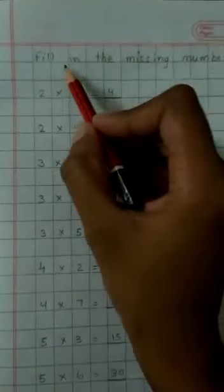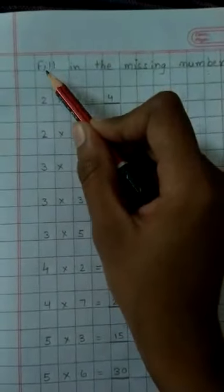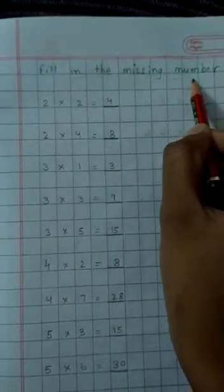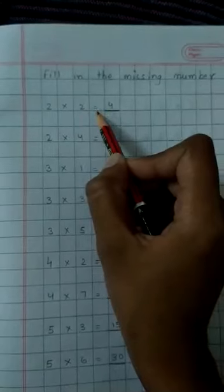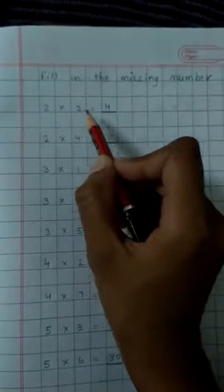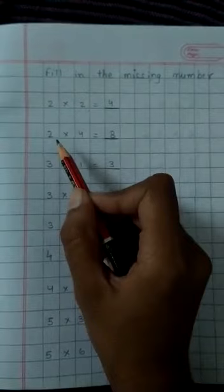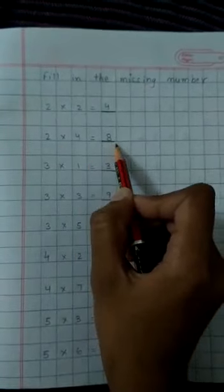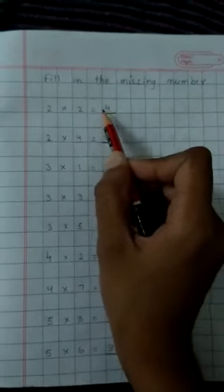So, now in the next page you will be writing this new heading. Fill in the missing number. 2 into 2 is equal to 4. 2 twos are 4. 2 fours are 8. You will underline 8 and 4.